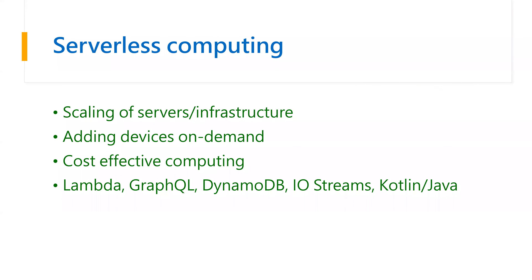Serverless computing is a new concept being developed. Simple examples are Lambda from AWS, GraphQL, and DynamoDB. They are trying to use the server side as little as possible, because going forward everything will be in the cloud — there won't be your own physical server. Cloud is pay-by-use: one hour versus four hours, or 1 GB versus 10 GB, you pay more. To pay less, you want to use it in the most efficient way, so you move towards serverless computing.